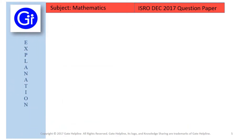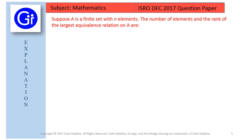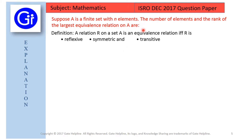Now we will see the explanation to this question. Suppose A is a finite set with n elements, and the number of elements and the rank of the largest equivalence relation on A are — first we will see what is an equivalence relation. A relation R on a set A is an equivalence relation if and only if R is reflexive, symmetric and transitive.